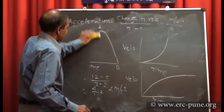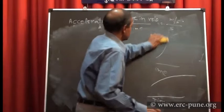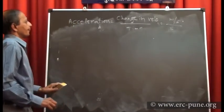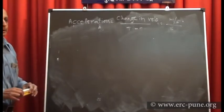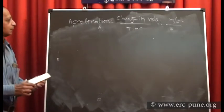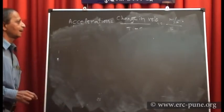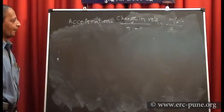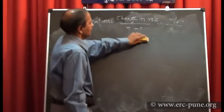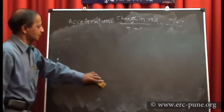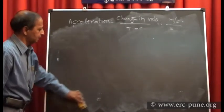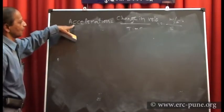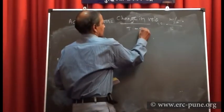We have discussed various quantities: distance — the actual length of the path taken by the particle; displacement — the shortest distance between initial and final position along with direction; speed — distance upon time; velocity — the rate of change of displacement with respect to time. Speed is a scalar quantity; velocity is a vector quantity.